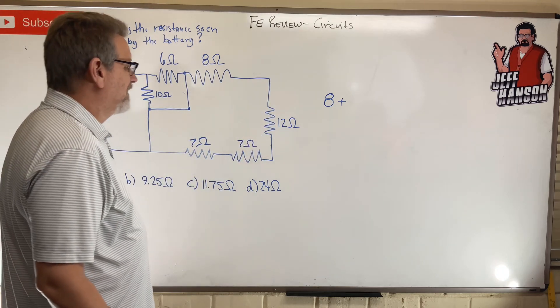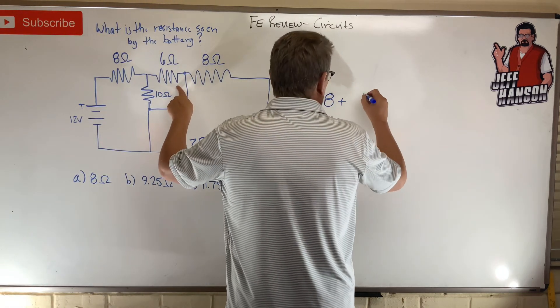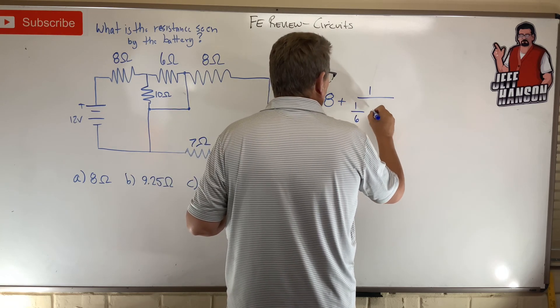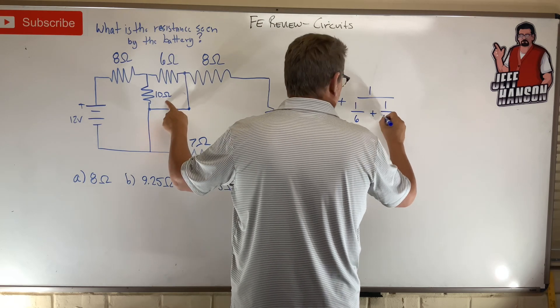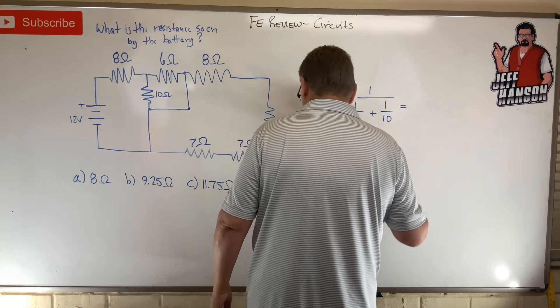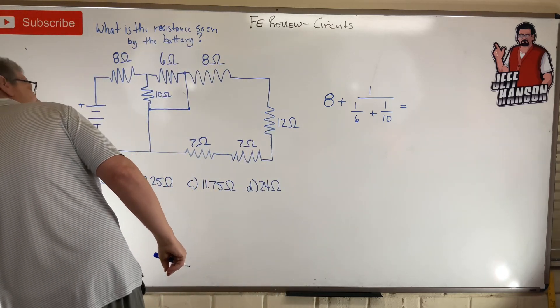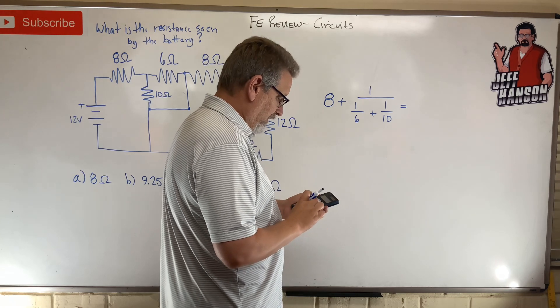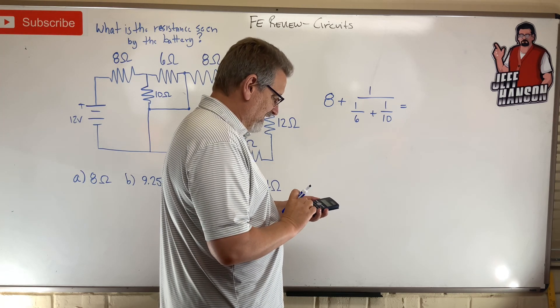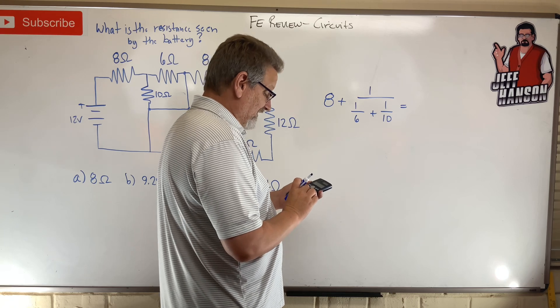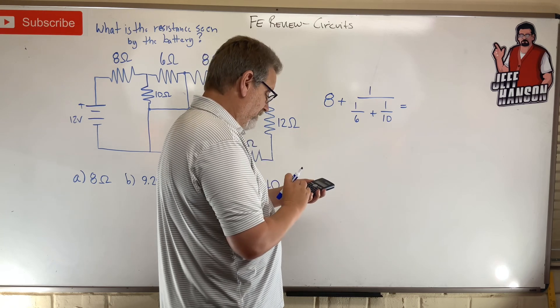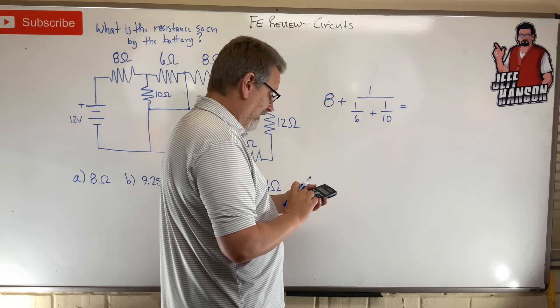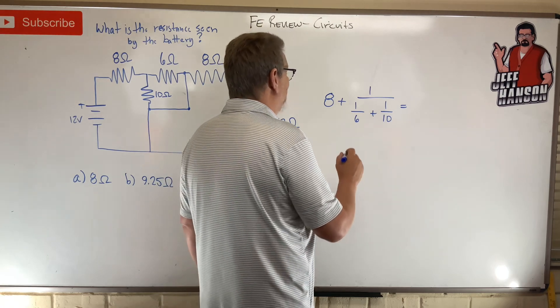Okay, so here we go. You remember how to do it. One divided by one over six plus one over ten. And that's going to give me the resistance seen by the battery. So let's see, one divided by six is 0.1666 plus 0.1 equals 0.2666. And then one divided by that answer is 3.75.